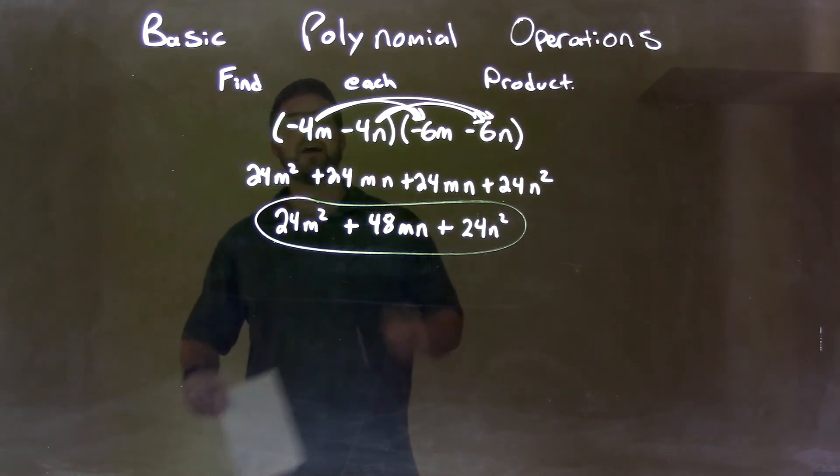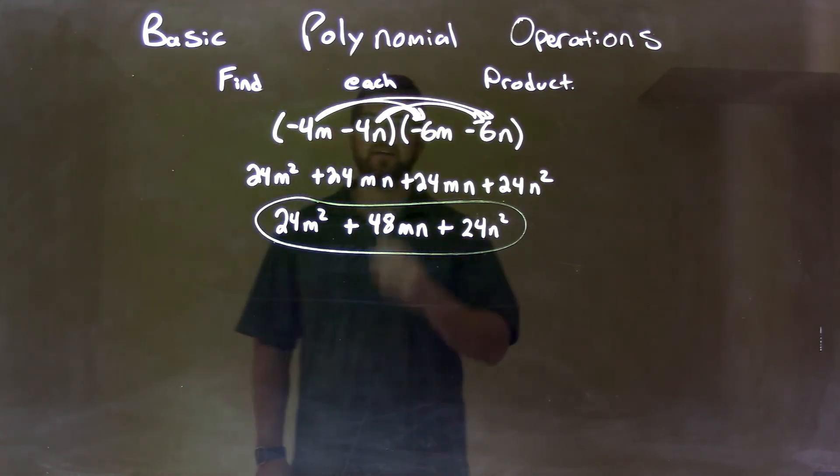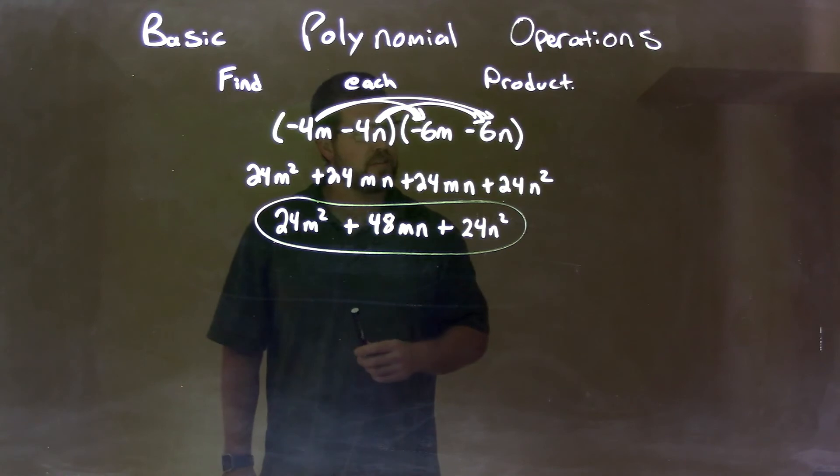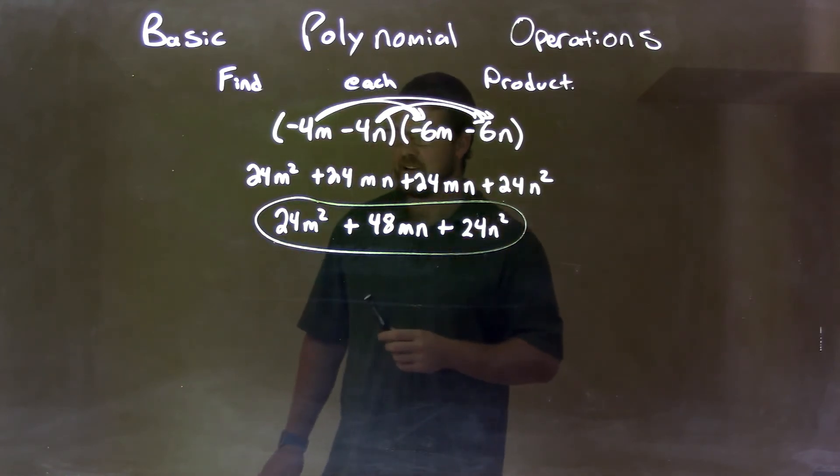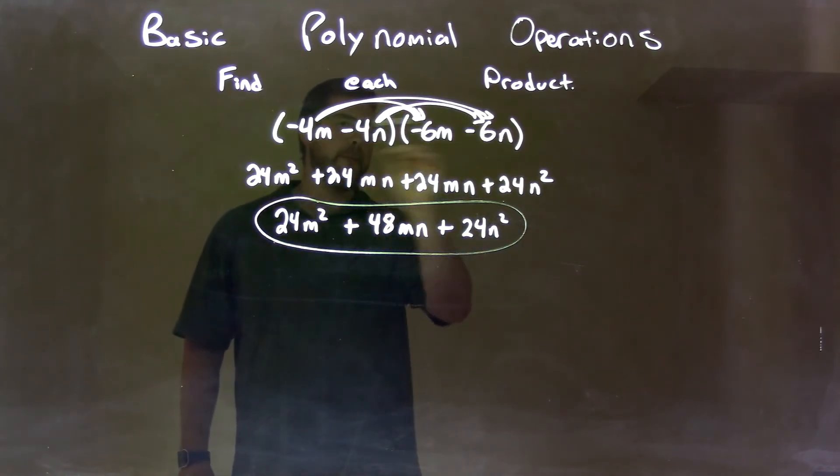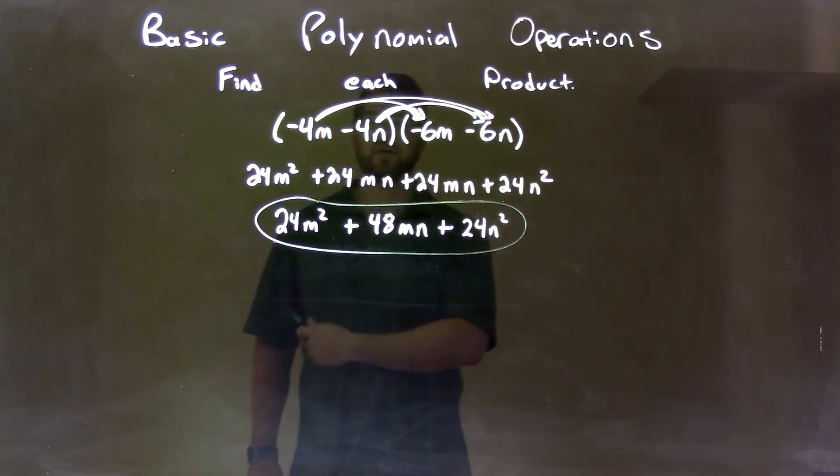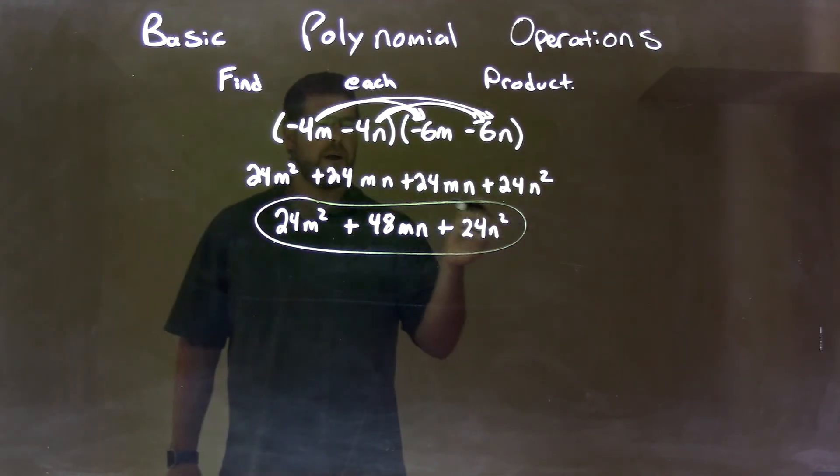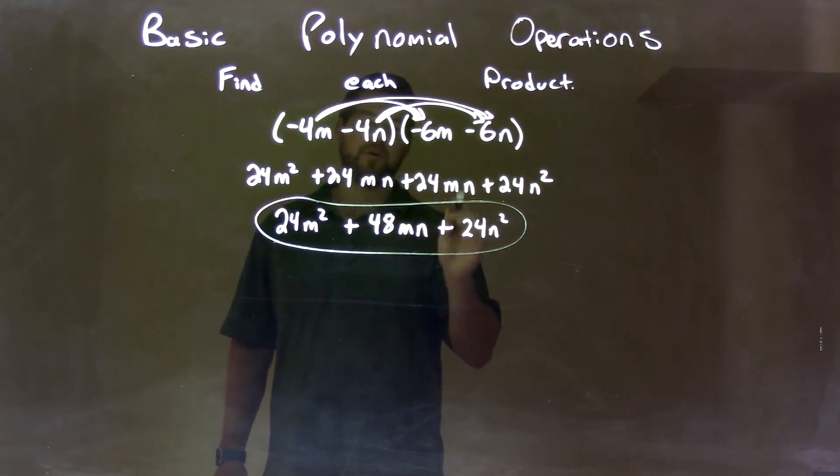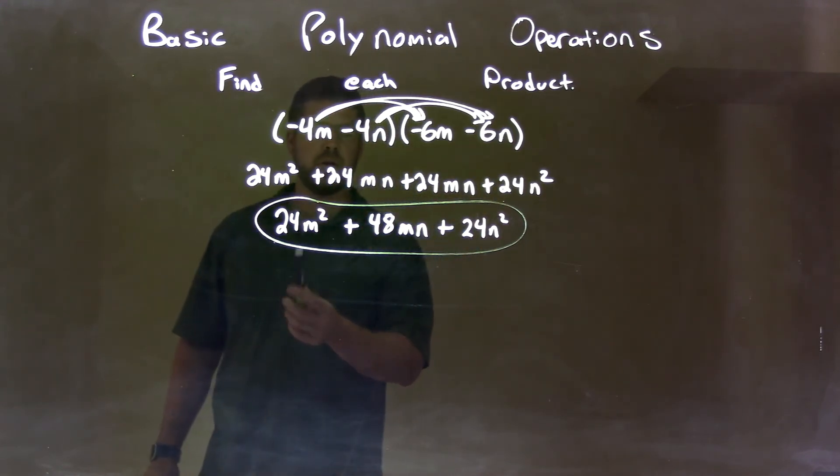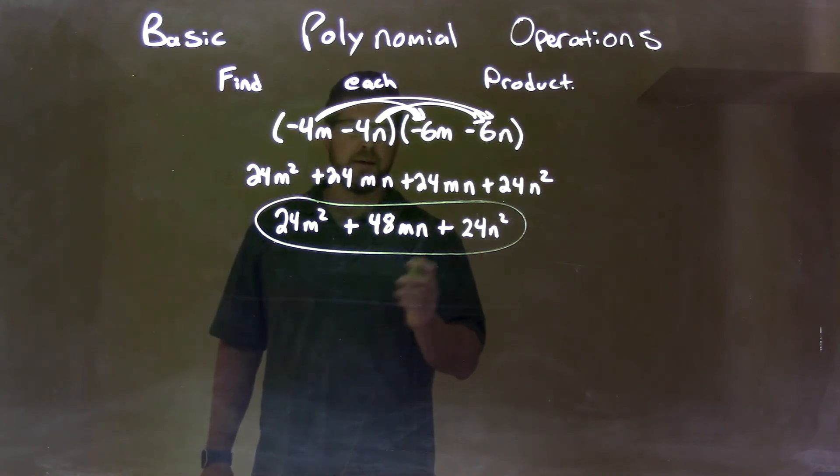Quick recap: we're given negative 4m minus 4n times negative 6m minus 6n. We distributed and got all parts of the first parenthesis by all parts of our second parenthesis to get 24m squared plus 24mn plus 24mn plus 24n squared. Then we combined our like terms, which is just the 24mn's, and that gave us our final answer: 24m squared plus 48mn plus 24n squared.